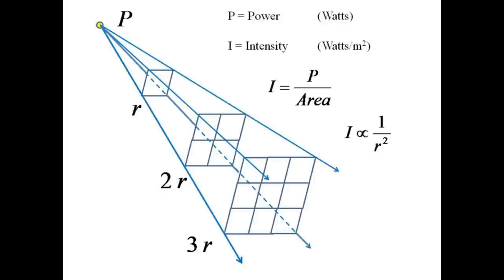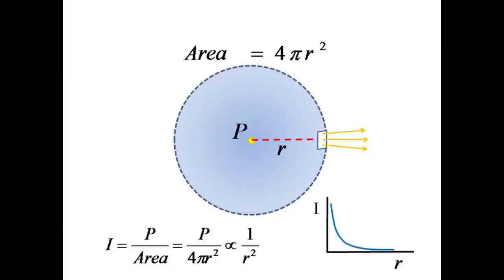We call such a rule an inverse square law, and have encountered it previously in the context of both the gravitational and electrical forces. Another way to look at the situation is that the point source radiates its power p uniformly in all directions, such that if we sample the radiation passing through a unit area at a distance r, the intensity is given by the power of the source divided by the entire area of the sphere. Since the area of a sphere is given by 4 pi r squared, the intensity drops off as the inverse square of the radius.